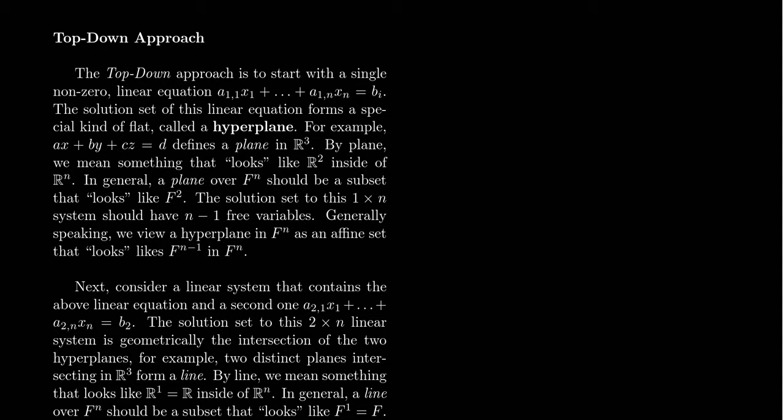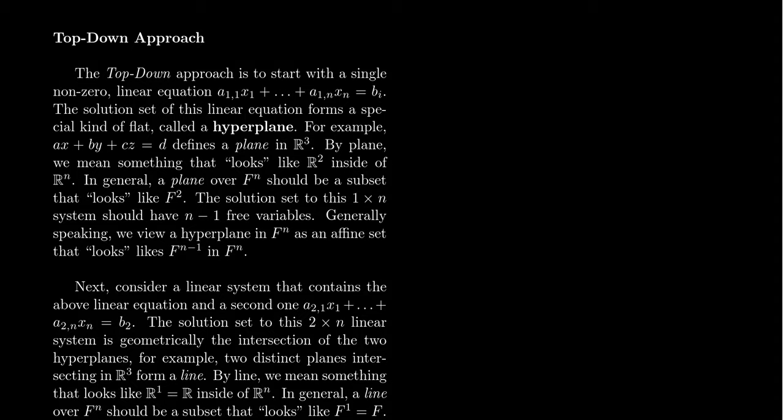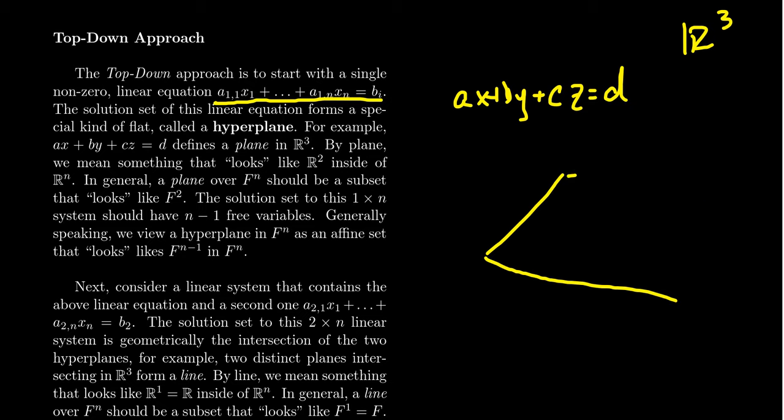Now the top-down approach for describing flats is to use linear equations and we're going to start adding more linear equations. So let's say we have a single linear equation and use the example of R3 to help motivate what happens here. If you have a single linear equation like AX plus BY plus CZ equals some number D, this is going to afford you some type of plane that lives inside of R3. The angle will depend on the coefficients ABCD and things like that. But we'll have some plane that lives inside a three space.